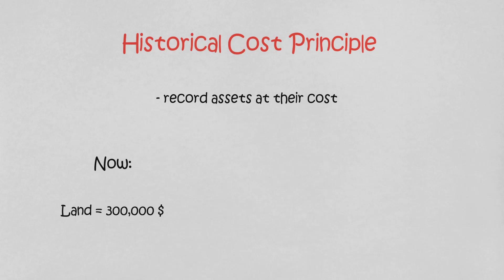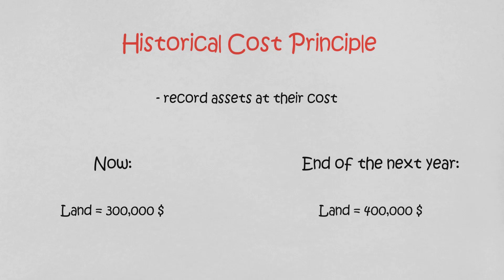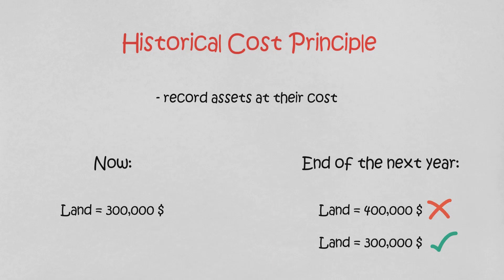But what does it do if, by the end of the next year, the fair value of the land has increased to four hundred thousand dollars? Under the historical cost principle, it continues to report the land at three hundred thousand dollars — not changing the amount to four hundred thousand.